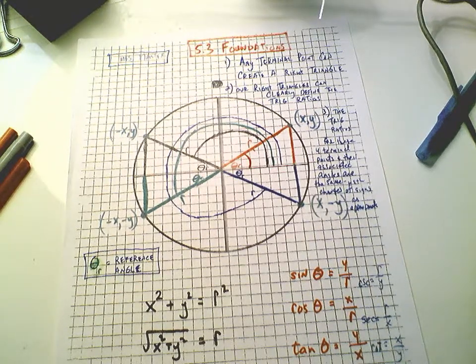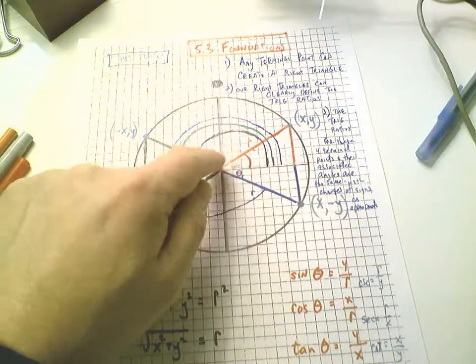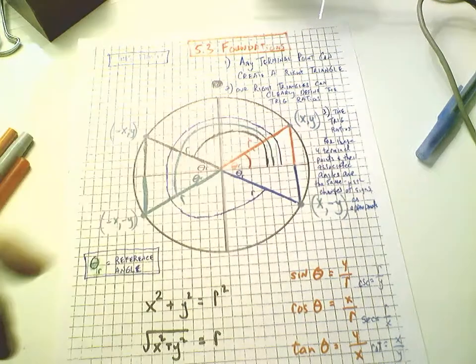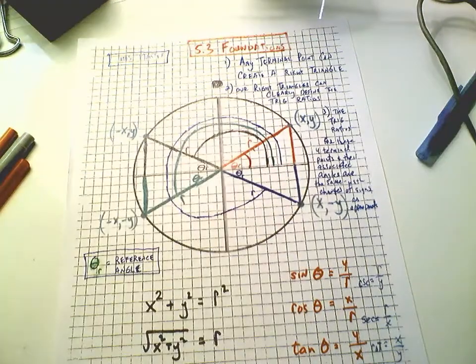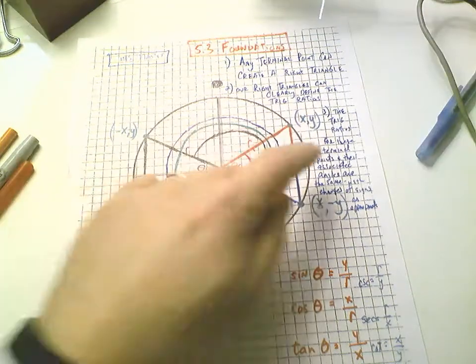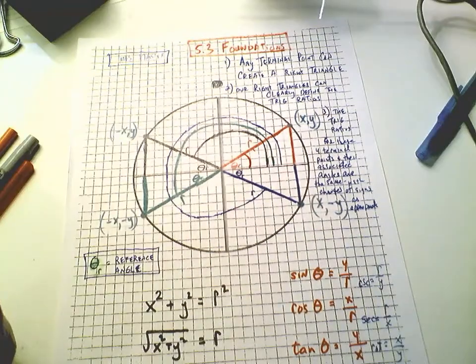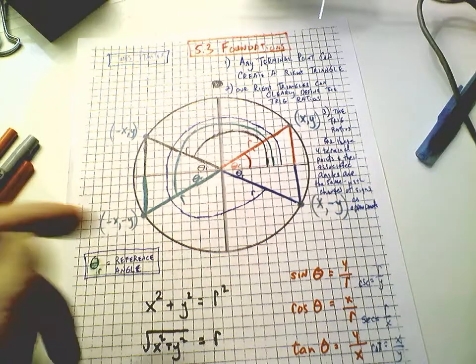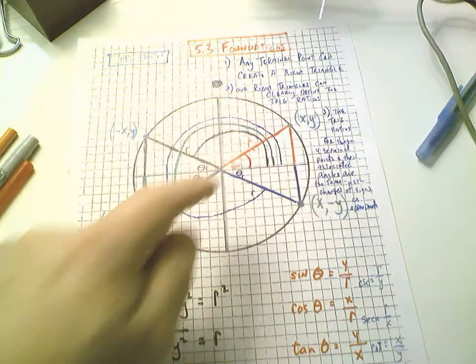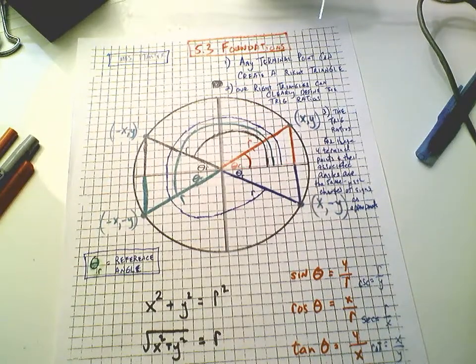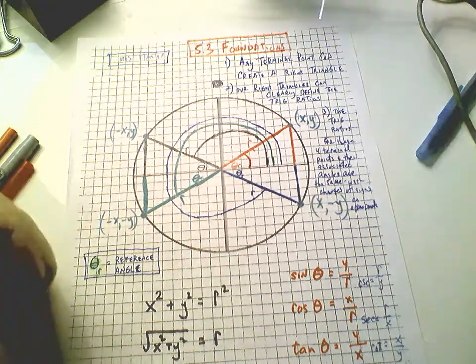So we'll start with our good old bowtie diagram one more time. Talked about it before - four different angles represented by those little arcs that you see on the inside here. Each one has a respective and symmetrical terminal point: xy, negative xy, negative x negative y, x negative y. All four of these have an underlying right triangle that we could build by connecting the terminal point back to the x-axis.